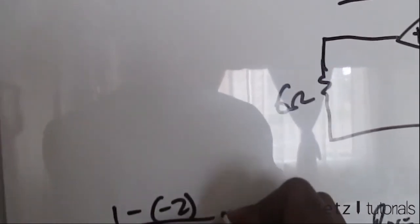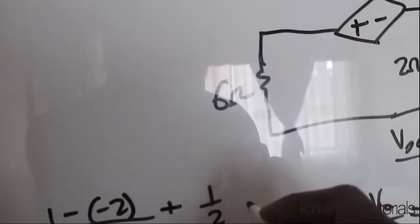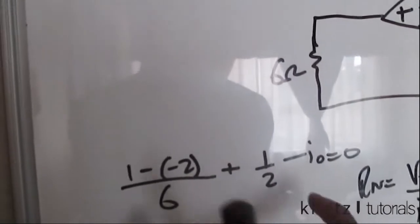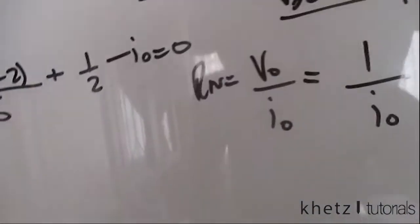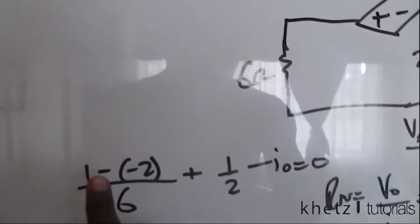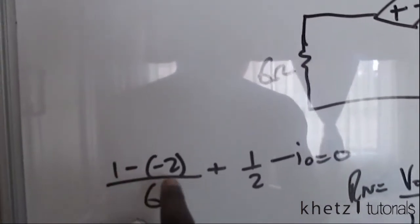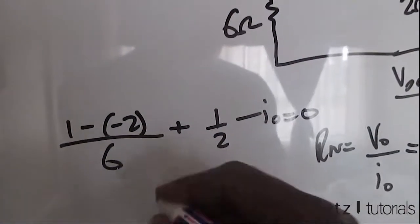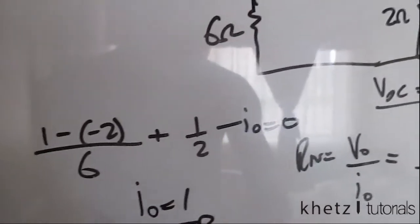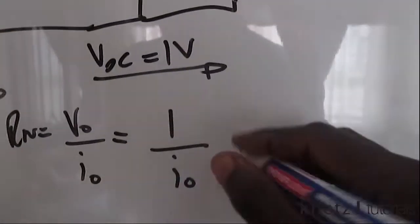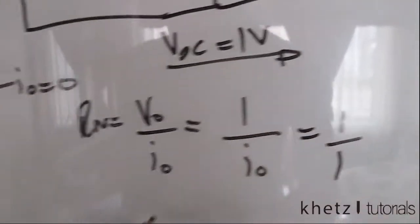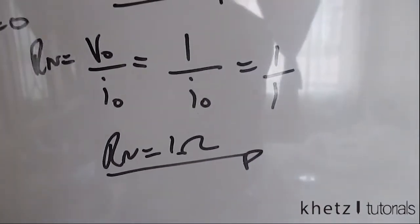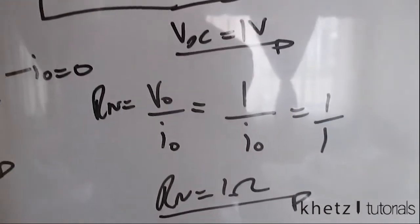Divided by six, then we're going to have plus one divided by two, then we're going to have negative Io equals zero, which means Io equals all of this. Punching that into your calculator, this is three over six, which is a half, and this is a half as well. Adding two halves you get one, so Io is equal to one. Now substituting this Io into this equation, we have one over one, which means Rn is equal to one ohm.